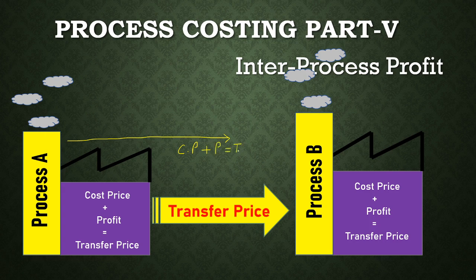The profit is transferred to the next process on the transfer price. So the transfer price has two elements: number one is the cost price, and another one is the profit. Profit may be on the cost price or it may be on the transfer price. With the help of an example we will understand the concept of inter-process profit and how the process accounts are prepared and profit is calculated.